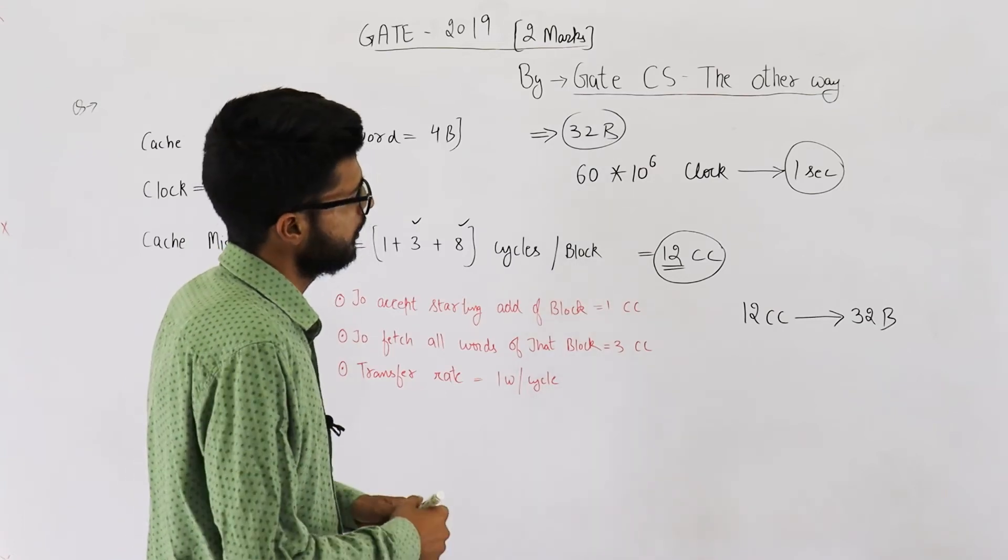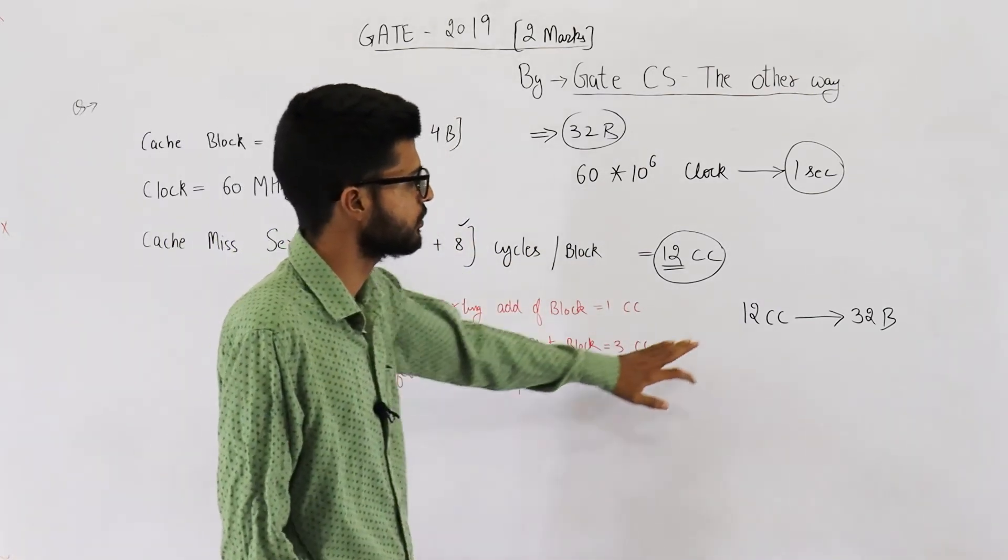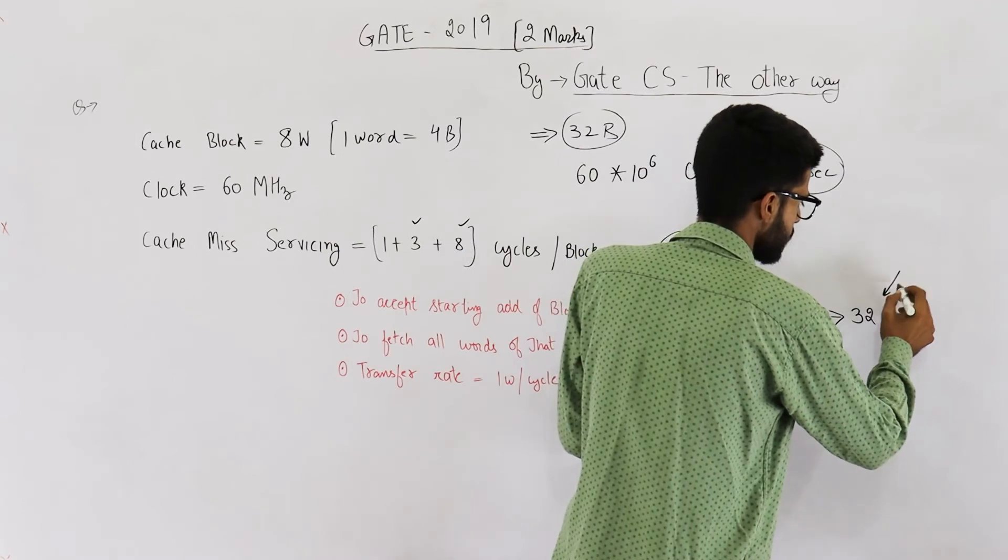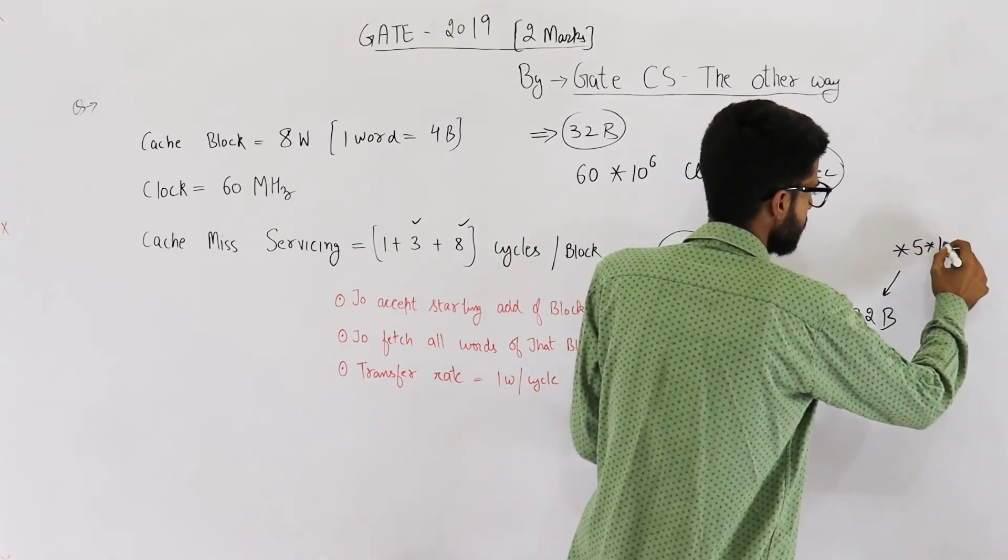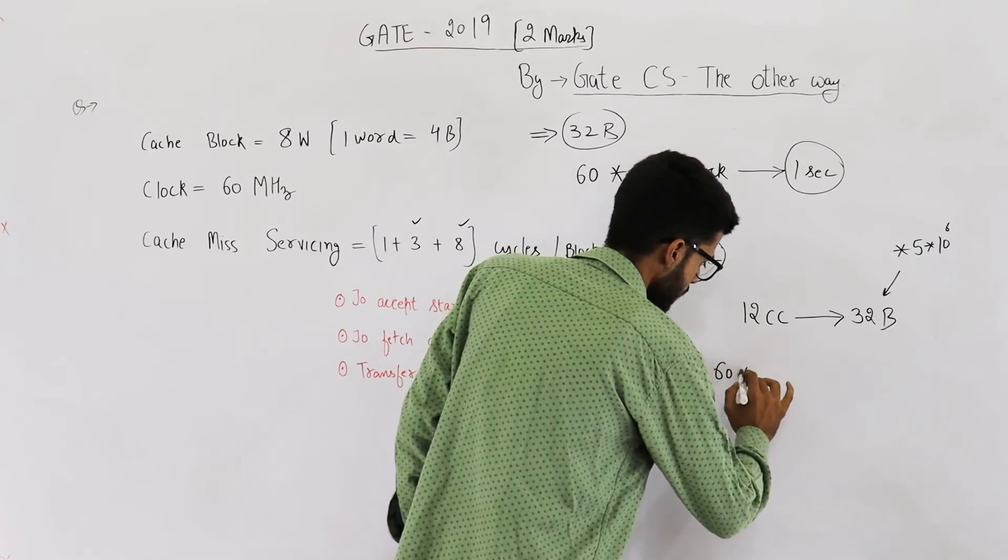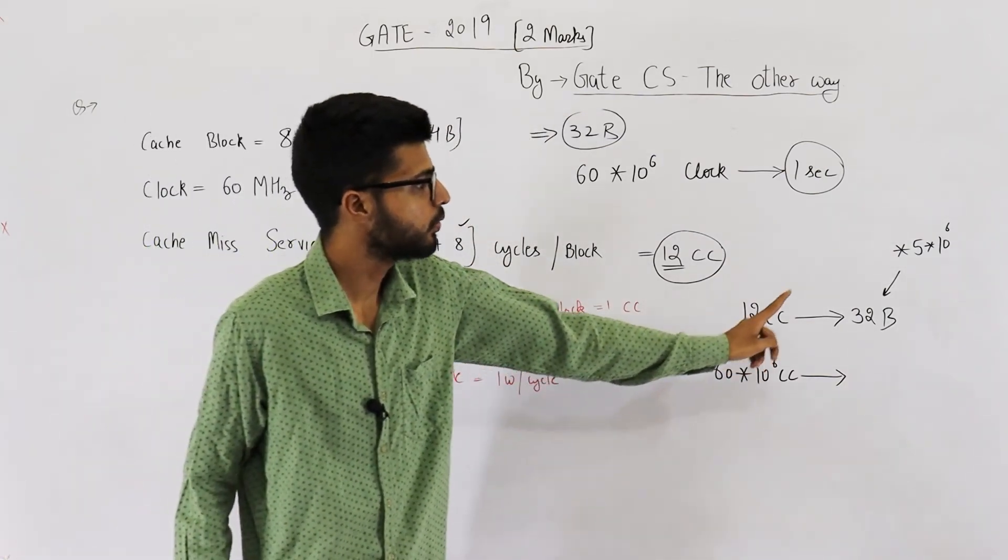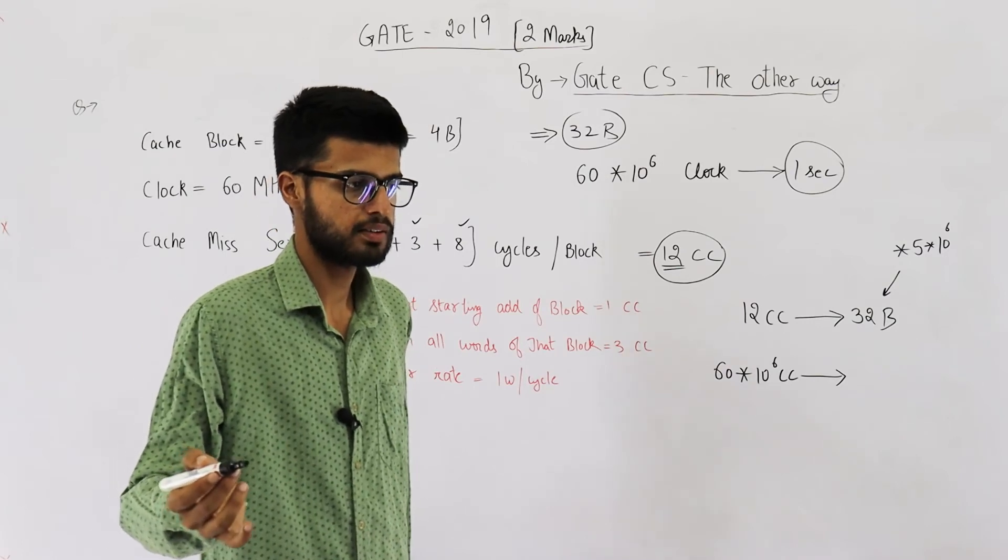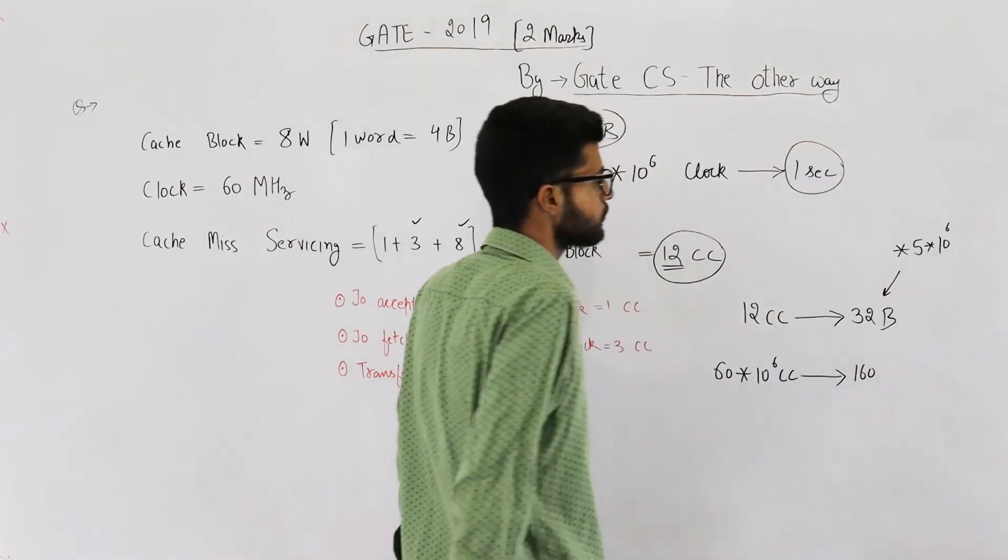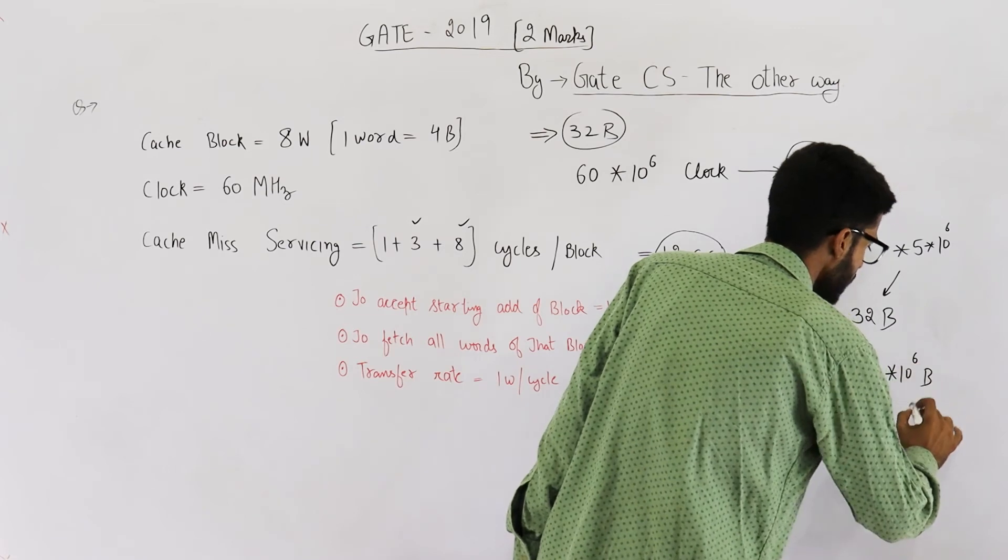Now, you can see 12 and 60 are related to each other by a multiple of 5. 12 5s are 60. So, you just multiply this equation by 5 or rather 5 into 10 raised to the power 6. Multiply this equation by 5 into 10 raised to the power 6. So, this becomes 12 5s are 60 into 10 raised to the power 6 clock cycles are enough to transfer 32 into 5. 32 into 5 is 30 into 5 is 150 and 2 into 5 is 10. So, this is 150 plus 10 is 160. 160 into 10 raised to the power 6. And the unit is bytes.